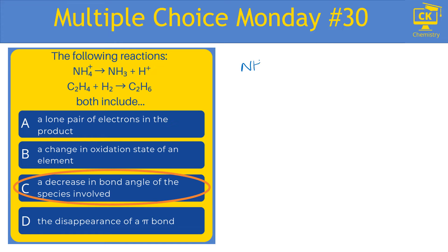NH4+ ammonium ion becoming ammonia and losing a hydrogen ion in the process, and C2H4, which is ethene, reacting with hydrogen to form the alkane C2H6.